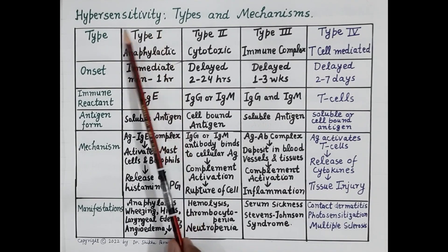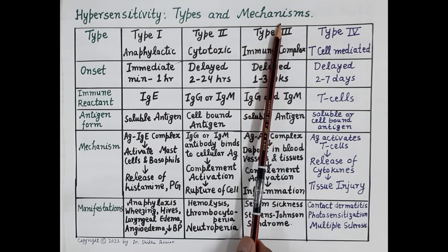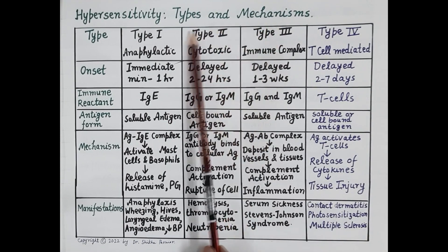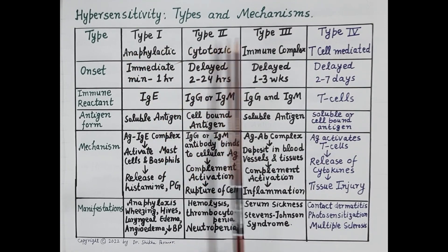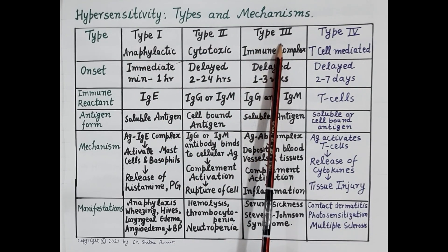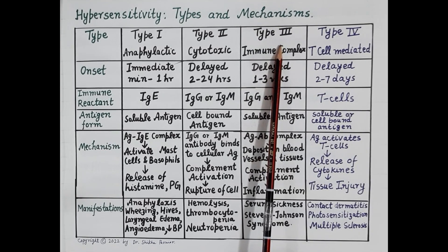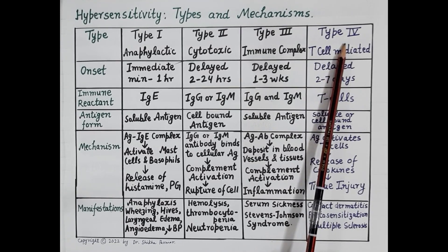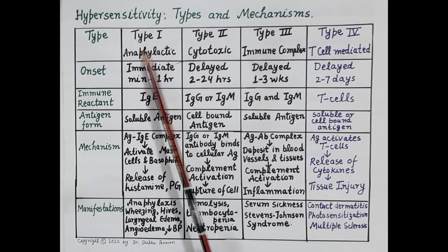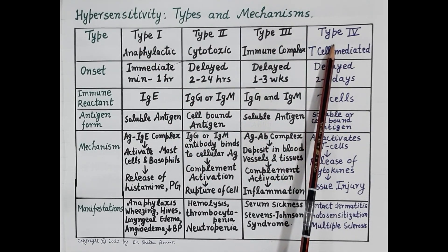Allergic reactions are of four types: Type 1, Type 2, Type 3, and Type 4. Type 1, Type 2, and Type 3 are due to the activation of humoral immunity, that is activation of B-cells, where antibodies are produced and cause allergic reactions. Type 4 allergy is due to the activation of T-cells and the production of cytokines.